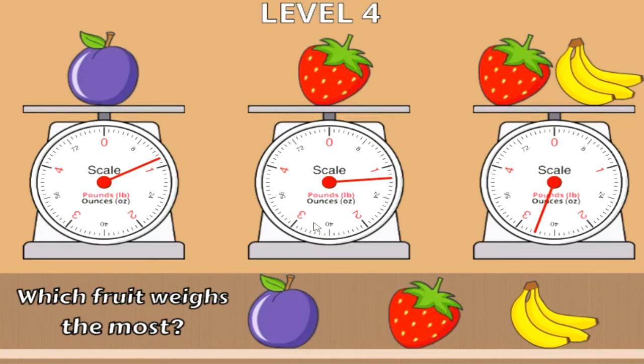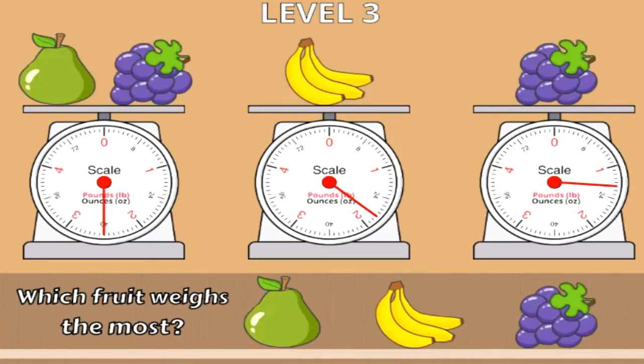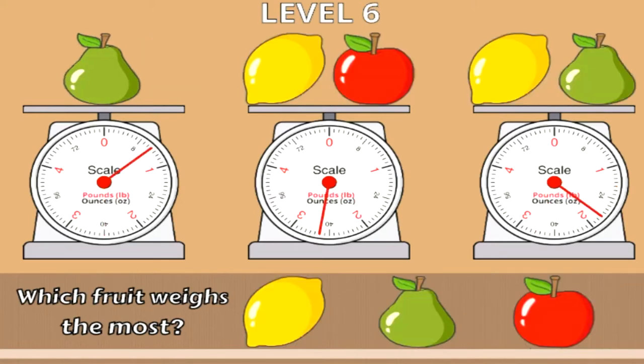We go on to the next level and this level plays pretty much the same. I'm going to go ahead and skip to a different level. Now this gets a little bit different because now we have two scales with multiple fruit on them.